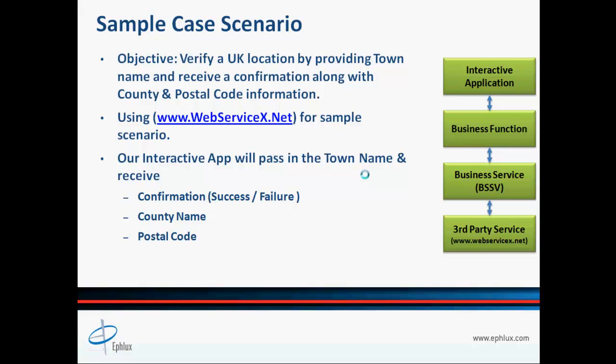Now let's take a look at our sample case that we will be covering in our hands-on exercise. Our objective is to verify a UK location by providing a town name to an external web service. We need to respond with a confirmation message along with county and postcode information. We will be using www.webservicex.net for this exercise — a very useful website that hosts over 70 plus web services. Our interactive app will provide the town name as an input, and our business service will respond back with a confirmation message of success or failure, along with county name and postcode information in case of successful execution.